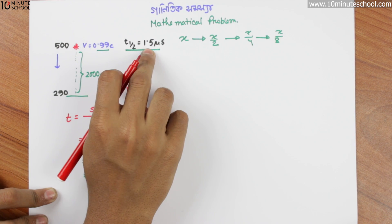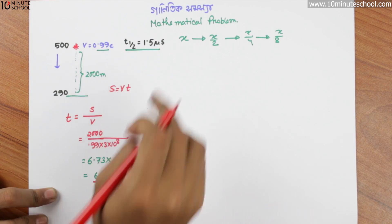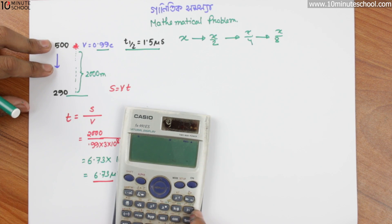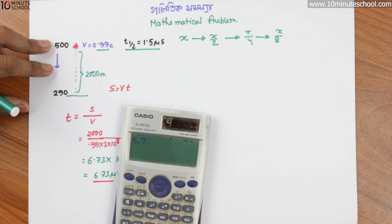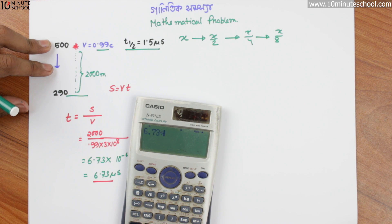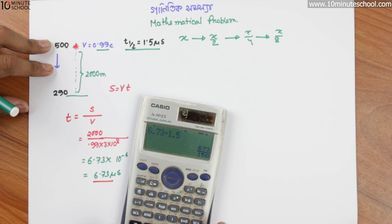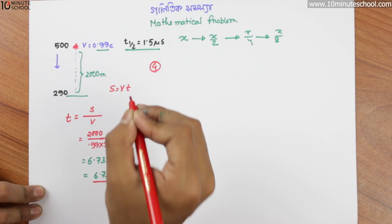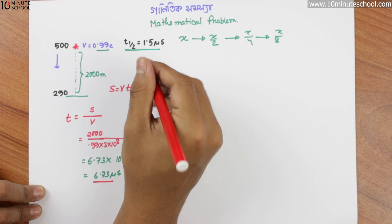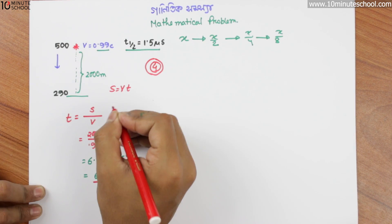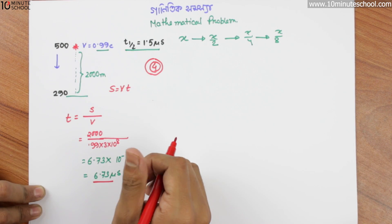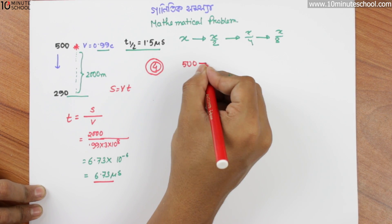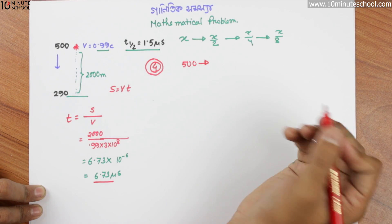6.73 divided by 1.5 microseconds gives 4.48, approximately 4.5 life cycles — about 4.5 times. The first figure is 1.5 microseconds.